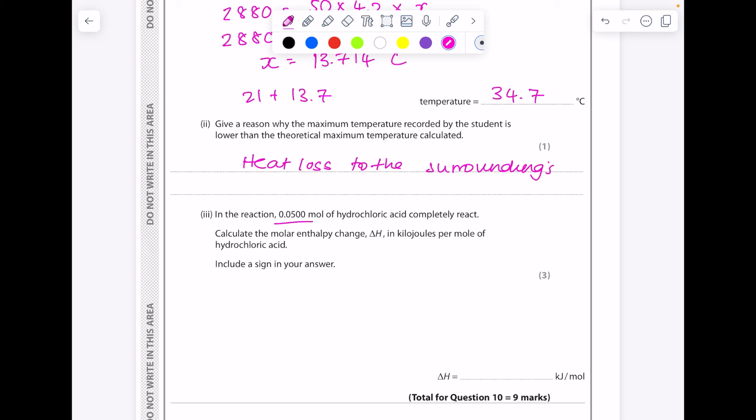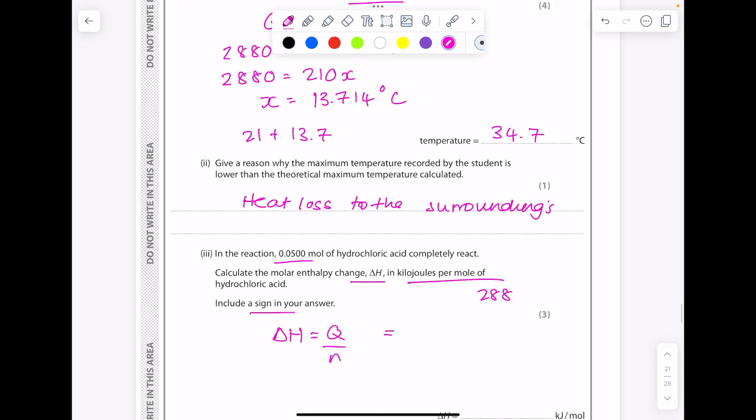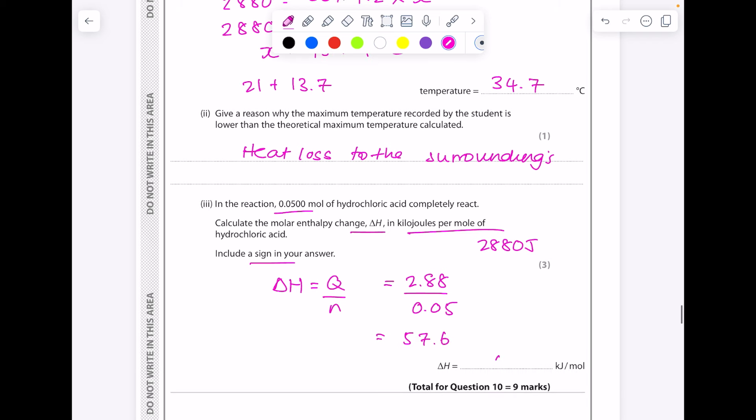Give a reason why the maximum temperature recorded by the student is lower than the theoretical maximum temperature calculated. So always heat loss to the surroundings. In the reaction, 0.05 moles of hydrochloric acid completely react. Calculate the molar enthalpy change in kilojoules per mole. Include a sign in your answer. So here is your equation. Q we've been told is 2,880 joules, but we need that in kilojoules so we divide by 1,000. The number of moles we've been told is 0.05, and then just be careful with that sign. Because the temperature went up, it was an exothermic reaction, so we need to add a negative sign there.